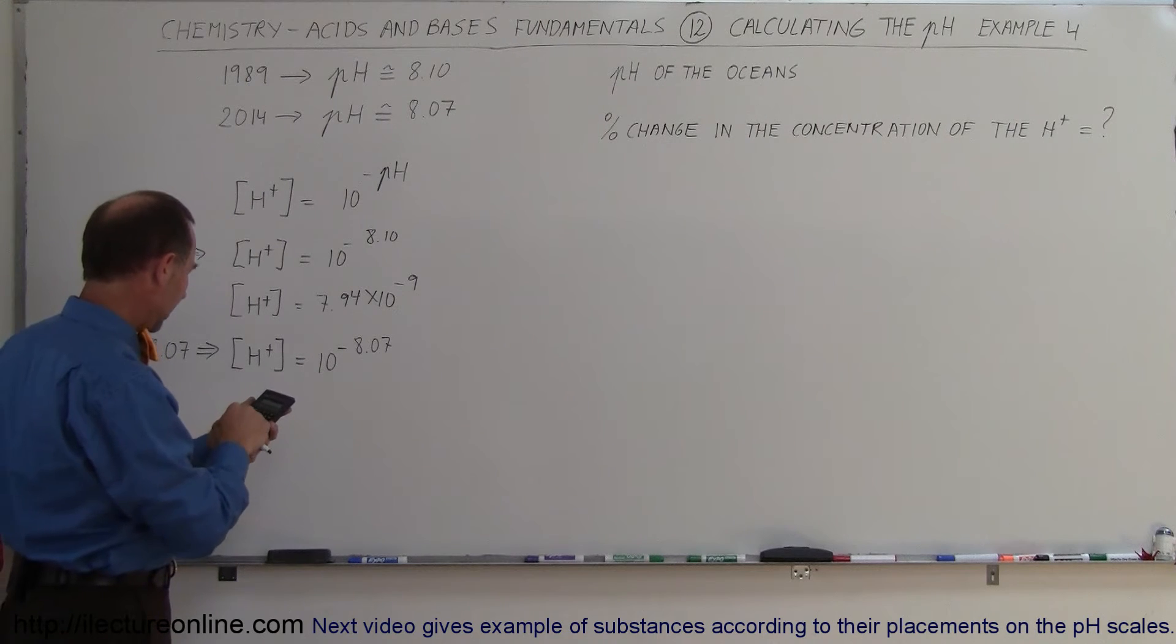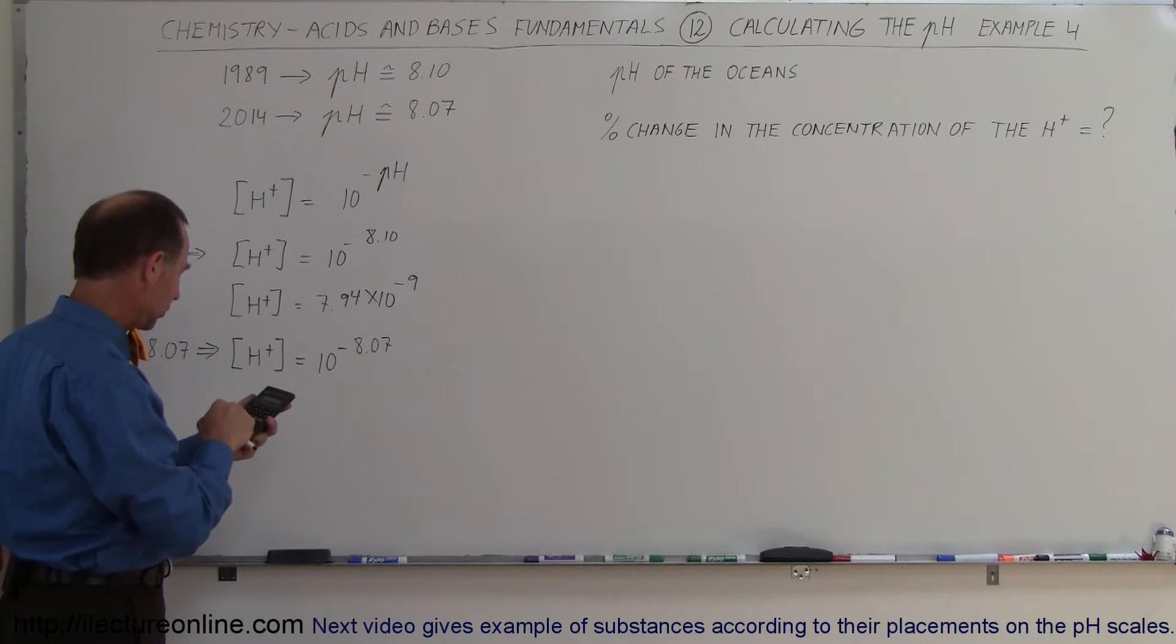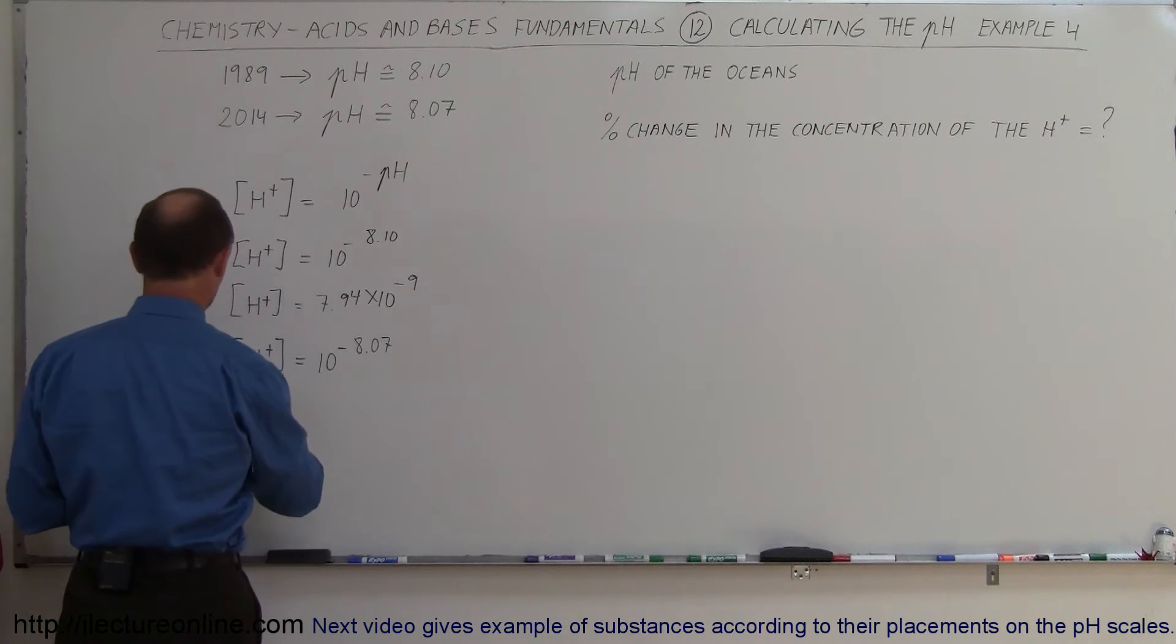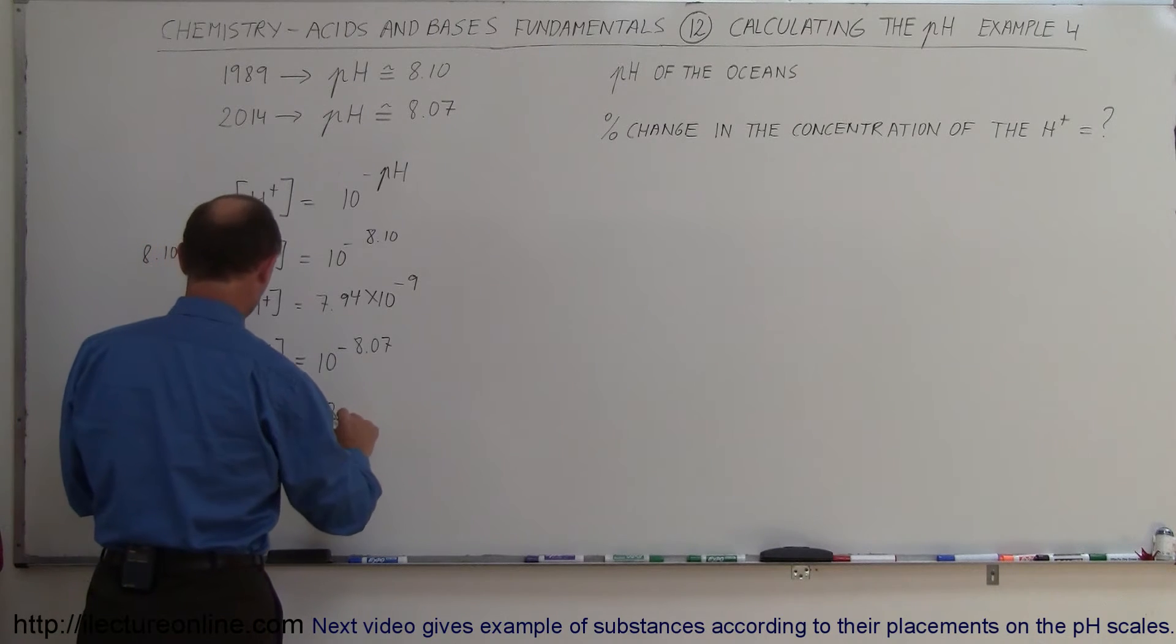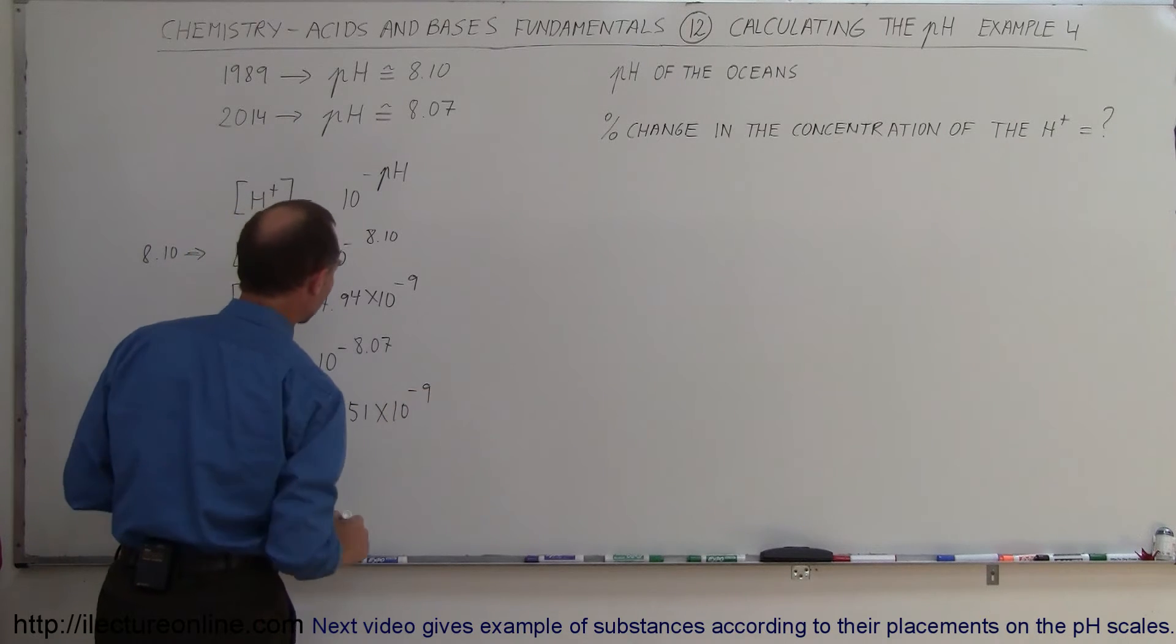Let's see here, 8.07 minus, raised up to the, let's start again, 10 raised to the 8.07 minus equals, and so for this one we get the concentration of the hydrogen ion is equal to 8.51 times 10 to the minus 9.